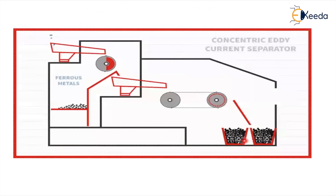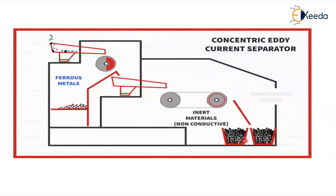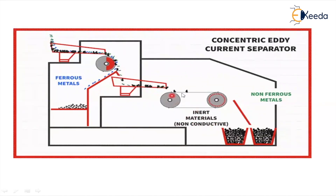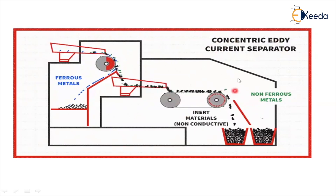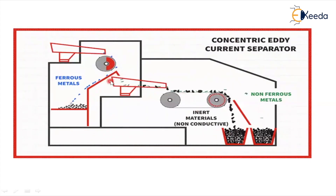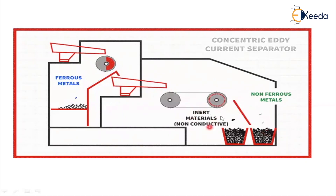Observe what is happening in industry. In any industry, ferrous and non-ferrous metals are separated — inert materials are also collected separately using a technique called the concentric decurrence operator. Ferrous metals are collected here, non-ferrous metals are collected here, and inert metals are collected separately.